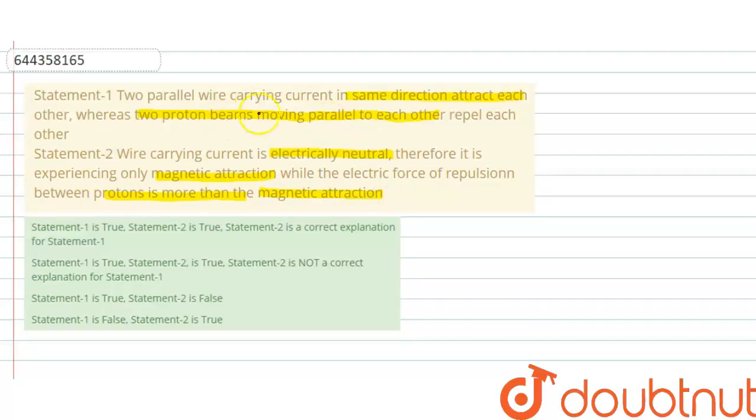So first statement is correct that if two are having a current moving parallel, or you can say same direction, okay let me draw the diagram. Like this is wire 1 and this is wire 2.